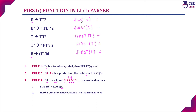First, we need to find FIRST(E). FIRST(E) requires us to consider the first symbol on the right-hand side of the production E → TE'. That first symbol T is a non-terminal, so by Rule 3 we need to find FIRST(T) and include it in FIRST(E). So FIRST(E) = FIRST(T), and we now go and find FIRST(T).